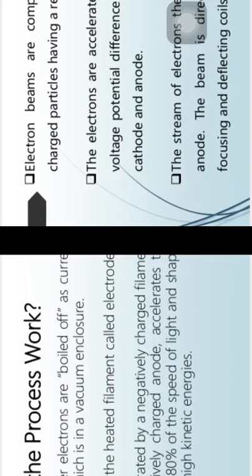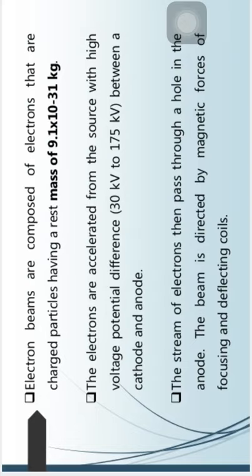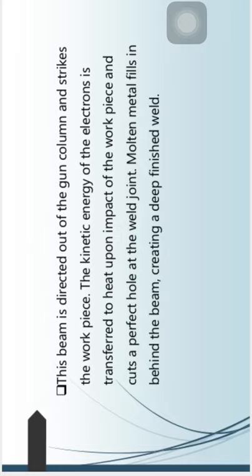The electron beams are composed of electrons having a rest mass of 9.1 × 10⁻³¹ kg. The electrons are accelerated from the source with a high voltage potential difference between cathode and anode. The stream of electrons then passes through a hole in the anode. The beam is directed by the magnetic forces of focusing and deflecting coils. This beam is directed out of the gun column and strikes the workpiece. The kinetic energy of the electrons is transferred to the workpiece upon impact, cutting a perfect hole at the weld joint. Molten metal fills in behind the beam, creating a deep finish weld.